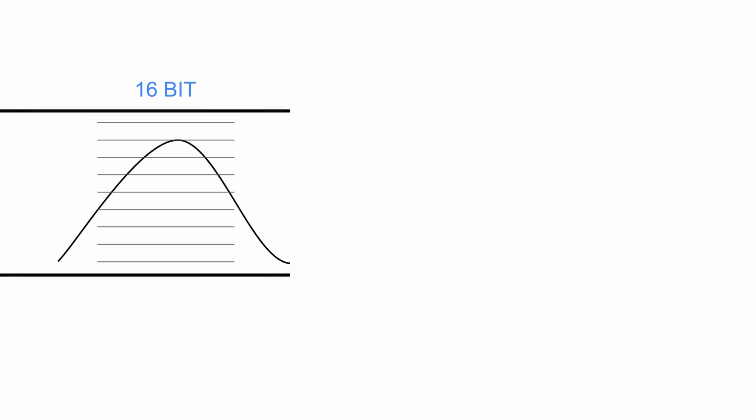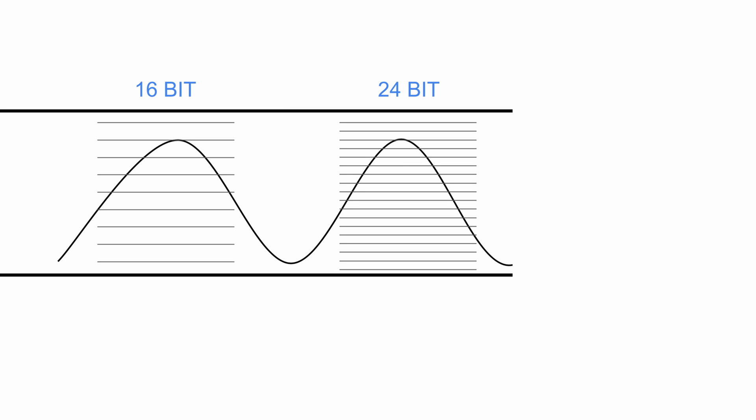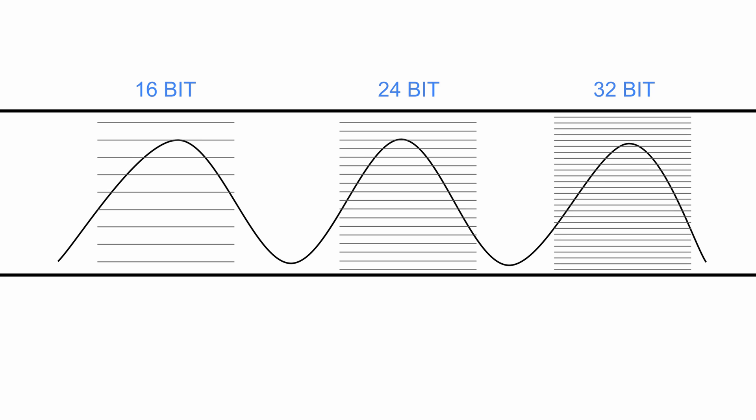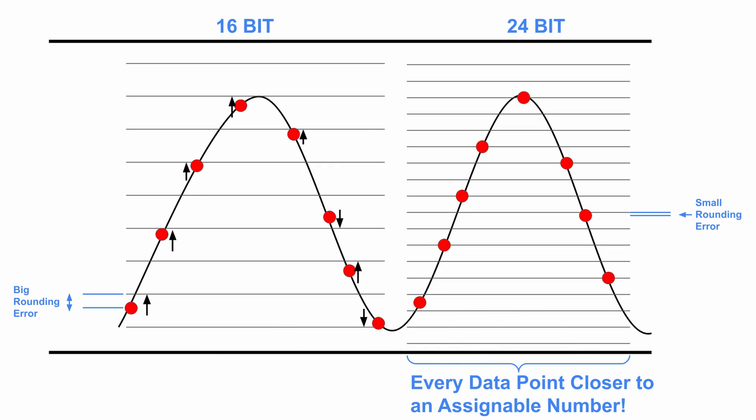When we assign a number to the amplitude of our audio signal, 16-bit audio files have the fewest values to choose from. 24-bit files have a lot more numbers to choose from, and 32-bit has way more. We're always going to be off by some amount when assigning a value to that waveform, so there's going to be some rounding error. For 24 and 32-bit audio files, because they have way more numbers to choose from, their rounding error is going to be a lot less than a 16-bit file.